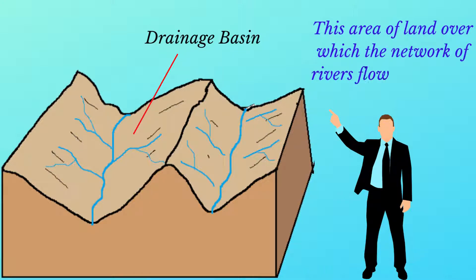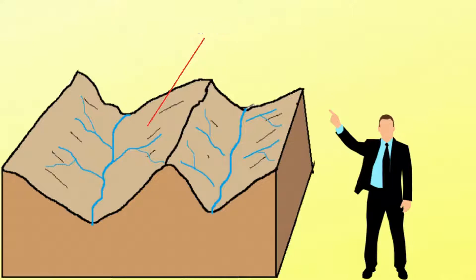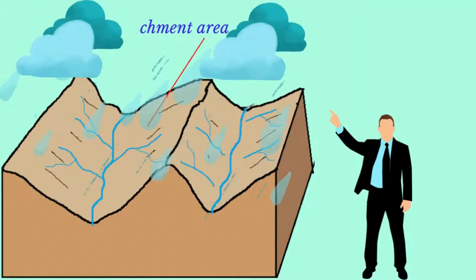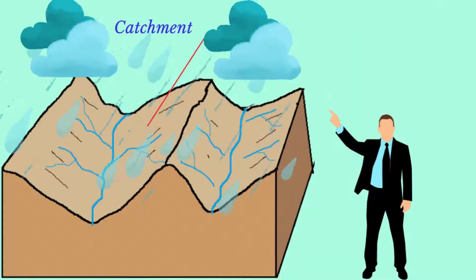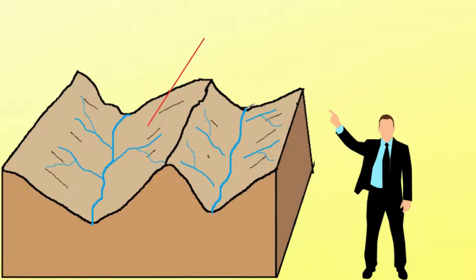One of the ways in which morphometry is applied is in the study of the drainage basin. The drainage basin refers to the whole area of land over which a river and its tributaries flow. It is called a basin because of the shape of the land, because the land descends towards the center. Another name for a drainage basin is a catchment area, because whenever it rains, water is collected by the basin and its rivers.